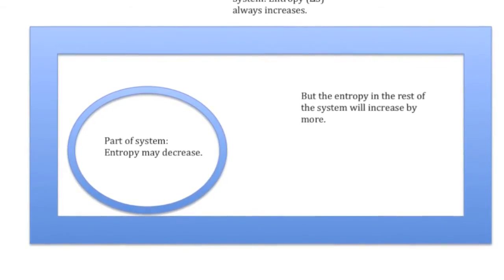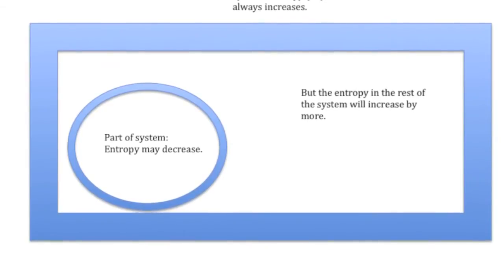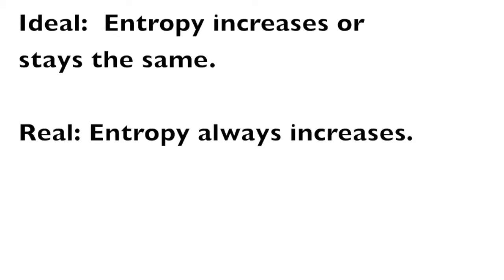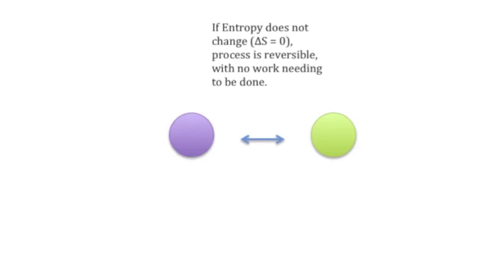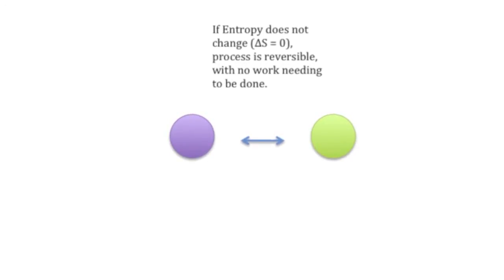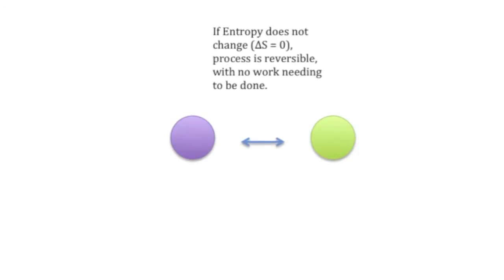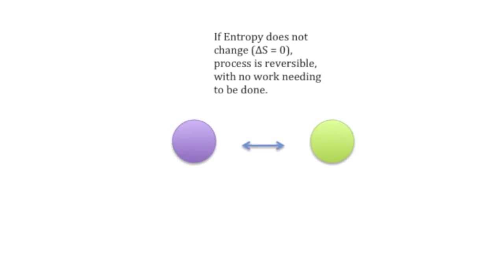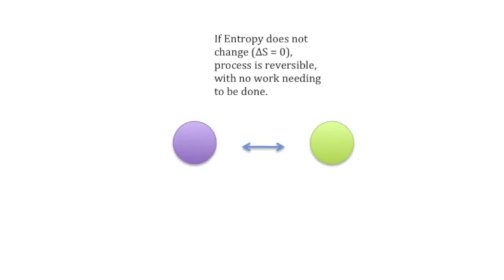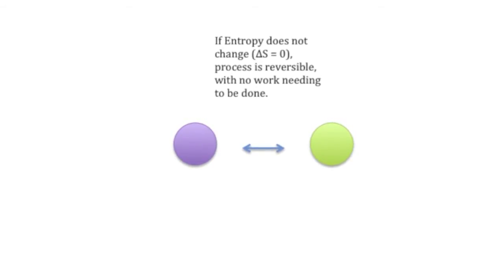Even if the entropy in a small part of a system goes down, the entropy in the entire universe will always go up. In an isolated system, entropy will always go up. It's possible for a very idealized scenario that entropy stays the same — no change in entropy — but that's only for an idealized system. When there's no change in entropy, the process is reversible: you can do the process forward or backward, and either one is favorable in nature. But in reality this doesn't happen because nothing is 100% efficient, so the entropy will always go up ever so slightly, and the reverse process will be unfavored — meaning work must be done.